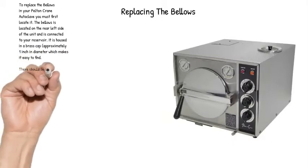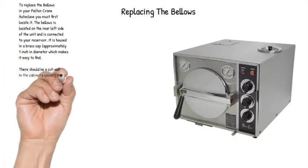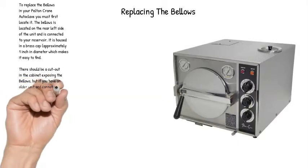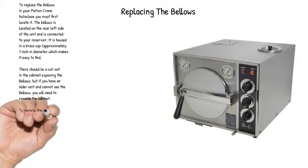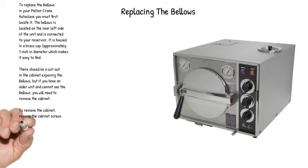It is housed in a brass cap, approximately one inch in diameter which makes it easy to find. There should be a cutout in the cabinet exposing the bellows, but if you have an older unit and cannot see the bellows, you will need to remove the cabinet.